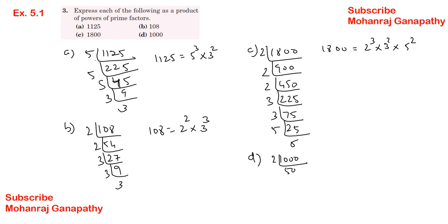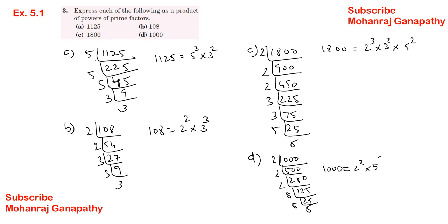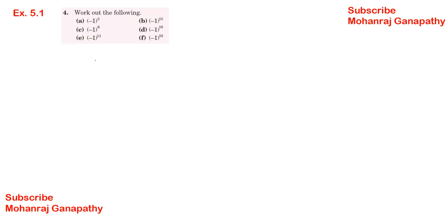Part D: 1000. Dividing: 1000 ÷ 2 = 500, 500 ÷ 2 = 250, 250 ÷ 2 = 125, 125 ÷ 5 = 25, 25 ÷ 5 = 5, 5 ÷ 5 = 1. So 1000 equals 2 cube into 5 cube.